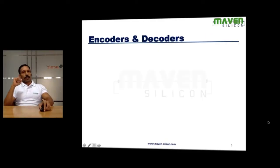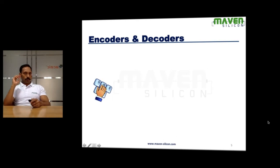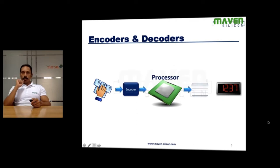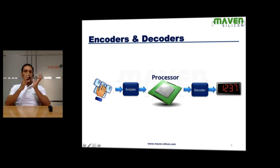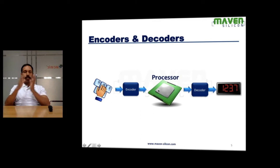Encoders and Decoders. I want you to understand how we use encoders and decoders when designing a particular digital system. For example, a laptop has a keyboard, a processor inside, and a display unit. Whatever input you provide through the keyboard, the encoder converts that input information into binary. The processor takes this input information and processes all the information in terms of binary, then produces the output.